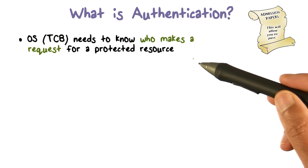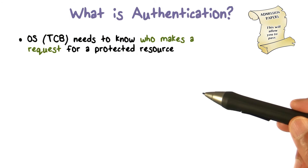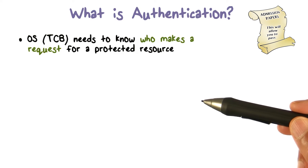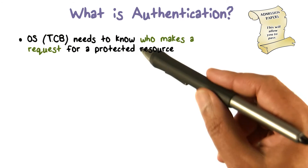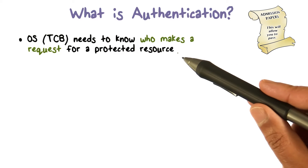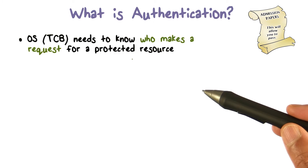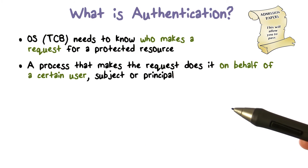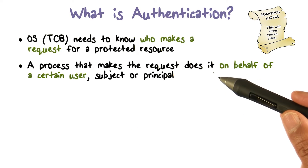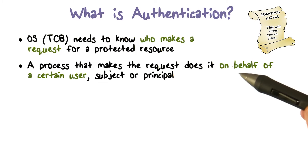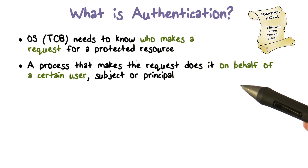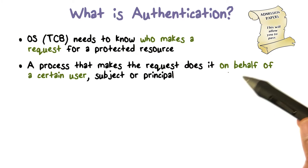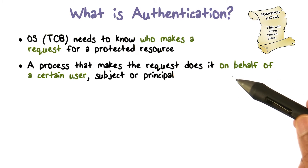Let's dig a little deeper into what authentication is. The operating system, or the trusted computing base, needs to know who is making a request for a protected resource. We know that in a computer system, a request actually comes from a process. This process may be running one of your services — your browser, mail client, whatever it is. The process is making the request, but we know that processes run on behalf of users.